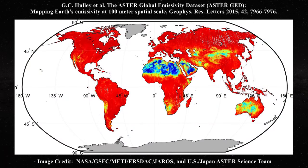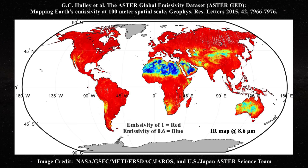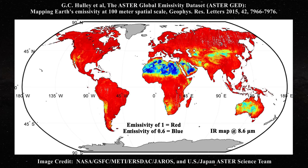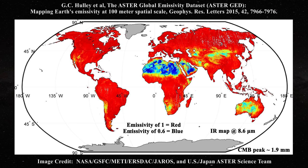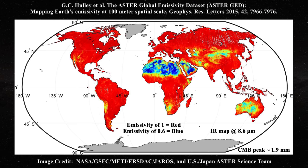Here is a map of the emissivity of the earth in the infrared at 8.6 micrometers as described in this paper found on the NASA website. The emissivity ranges from 0.6 to 1. Surprisingly, deserts and arid regions have the lowest emissivities — examine the Sahara, the southwestern US, and central Australia. At the same time, regions rich in moisture tend to have an emissivity near one. The microwave background lies in the far infrared and microwave region with a peak frequency of about 1.9 millimeters.